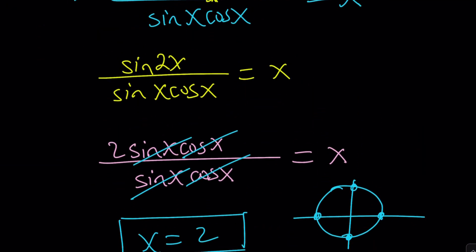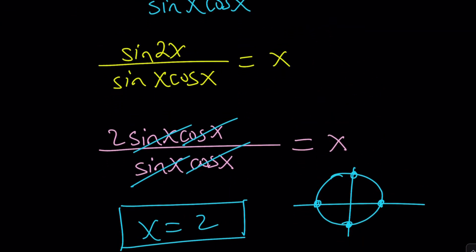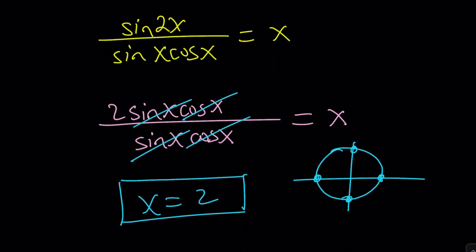Review these, double angle, sum, difference, product to sum, sum to product. Oh, man. There's a lot of formulas. So, there was one joke. I think there was a paper that said something like, math is not hard. You just have to memorize 1,579 formulas. It's a joke. I don't know the exact number. I just made it up. But, you get the idea.